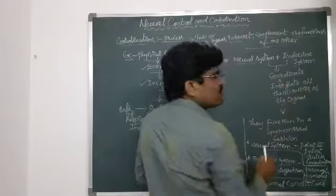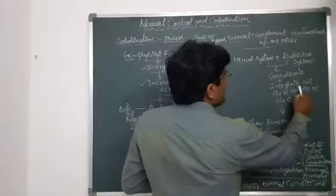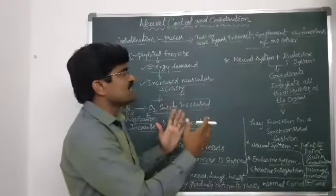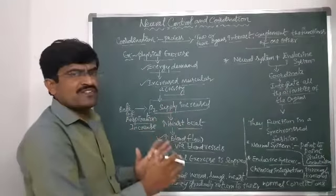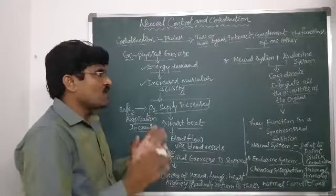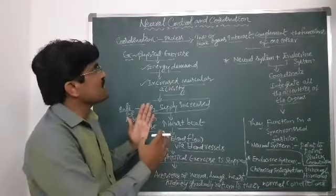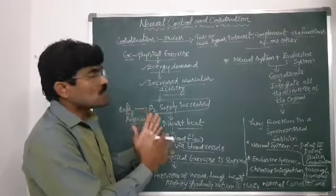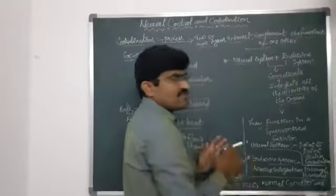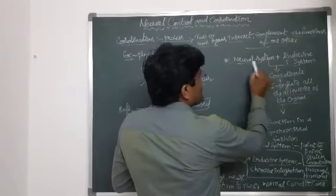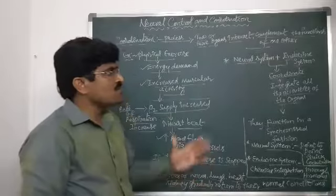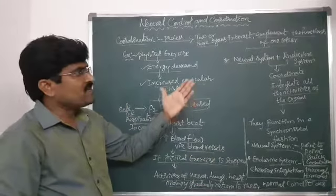The neural system and the endocrine system coordinate with each other and integrate all the activities of the organs. All systems in the body cooperate, but from the neural control and coordination point of view, we focus on these two. The endocrine system transmits signals through hormones.